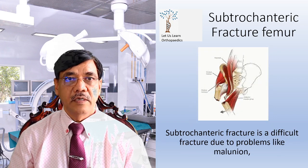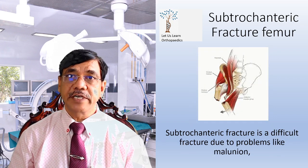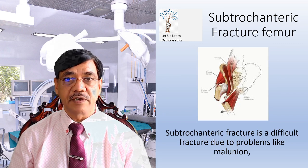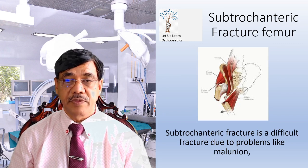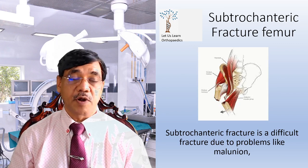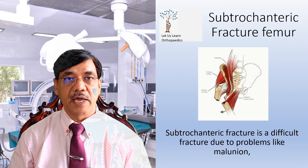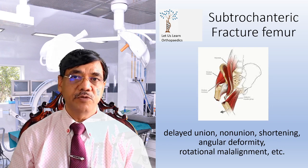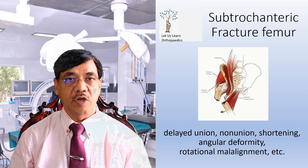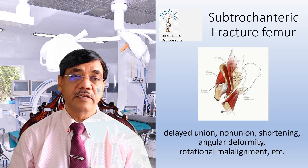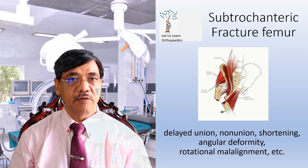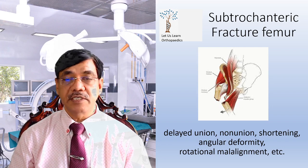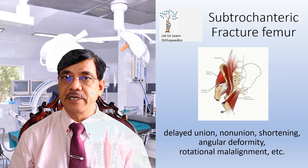The subtrochanteric fracture femur is a difficult fracture due to problems like malunion, delayed union, nonunion, shortening, angulation deformities, and rotational malalignment.